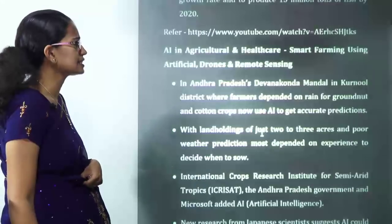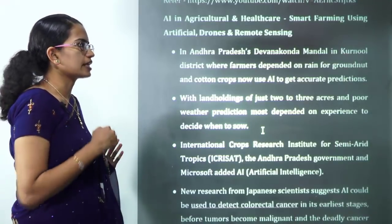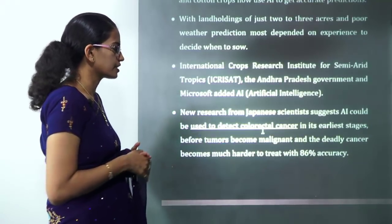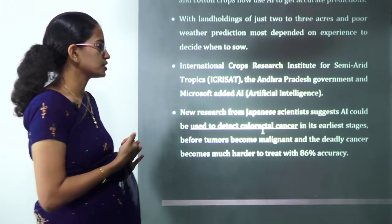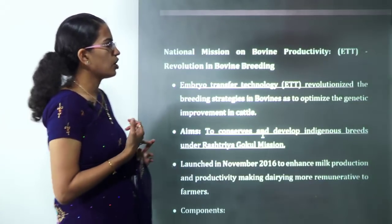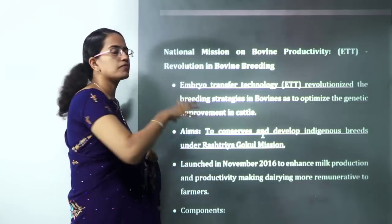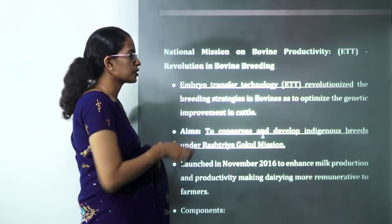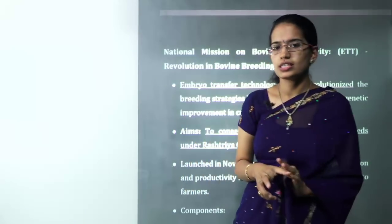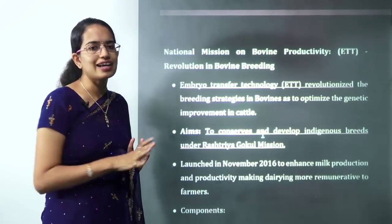Artificial intelligence is being used in healthcare and agriculture. RISAT and the Andhra Pradesh government have launched a joint AI project for agriculture. In healthcare, AI is being used to detect colorectal cancer. There is also a National Mission on Bovine Productivity using embryo transfer technology for breeding stations, aligned with the Rashtriya Gokul Mission — important for animal husbandry and agriculture optional students.